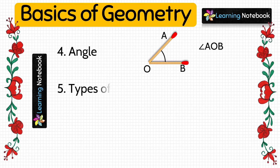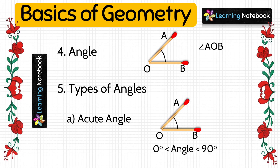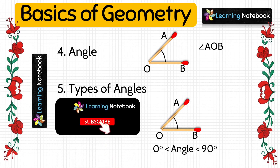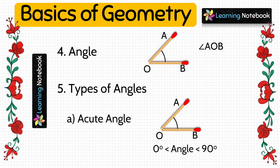Now let's represent types of angles. The first one is acute angle. An acute angle is greater than 0 degrees but less than 90 degrees. We will take two matchsticks and paste them as shown here; they form angle AOB which is an acute angle.